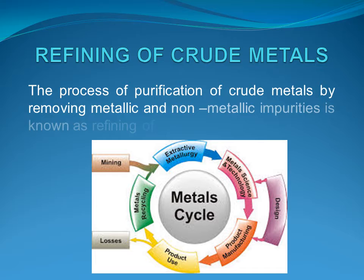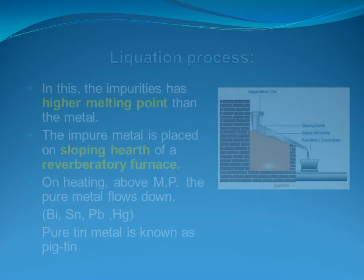Metals obtained after smelting or any other method may contain impurities like their unreacted or unreduced oxides, other metals, non-metals and gases. The purification of crude metals by removing metallic and non-metallic impurities is known as refining of metals.